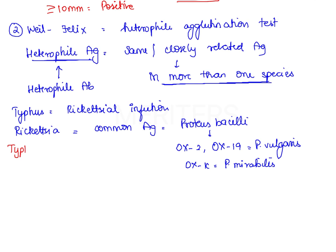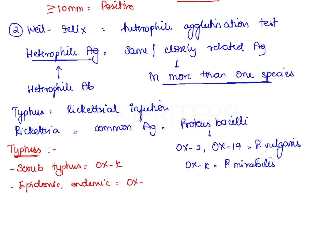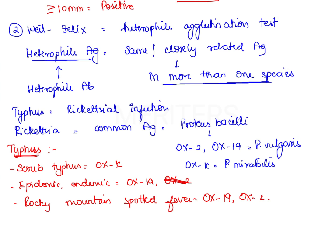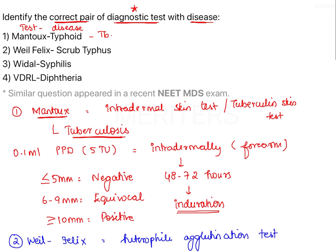Different types of typhus can be differentiated: scrub typhus shows positive agglutination only with Ox K strains, whereas epidemic and endemic typhus show positive agglutination for Ox 19 and Ox 2. Rocky Mountain spotted fever shows positive agglutination for both Ox 19 and Ox 2, but not Ox K. Therefore, Weil-Felix test is a heterofile agglutination test for typhus, making option 2 a correct combination.